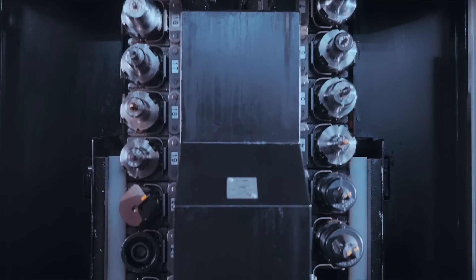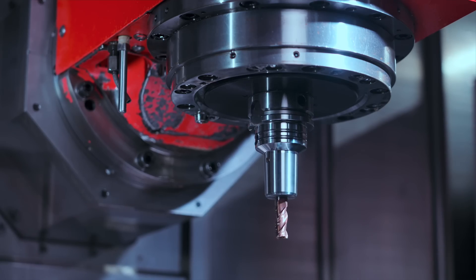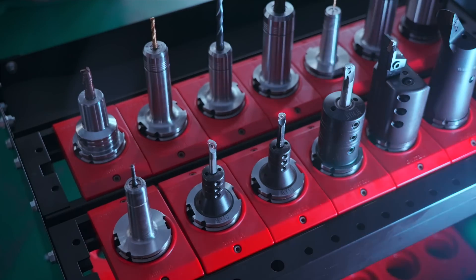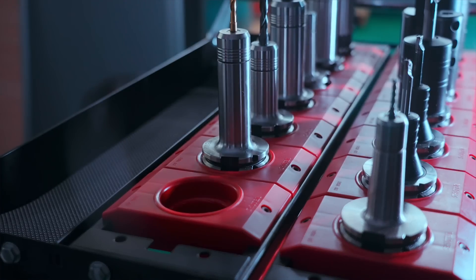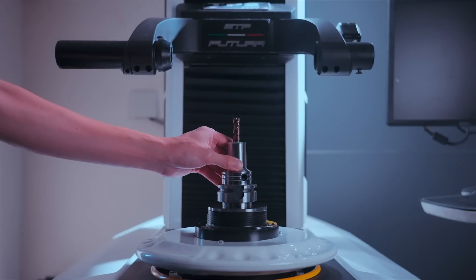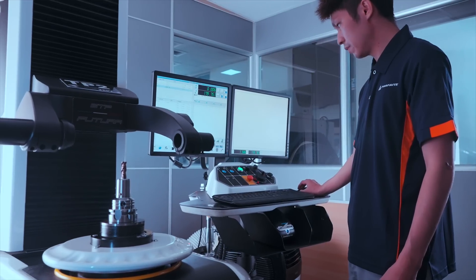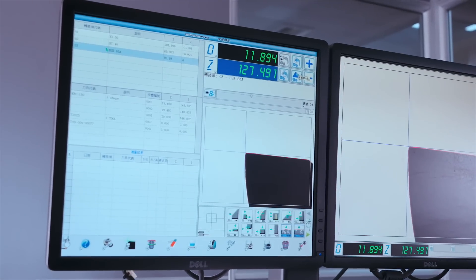The tool holder is the most direct link between the spindle and the cutting tool on a machine tool. So deviations as small as 2 to 3 micrometers can affect the lifespan of the cutting tool and the spindle, the yield, and ultimately the efficiency of machining.